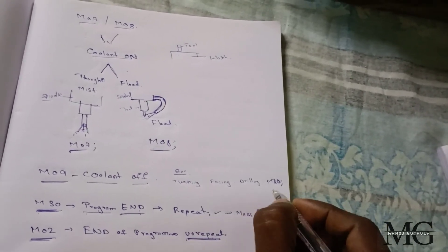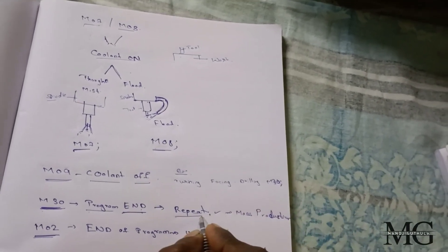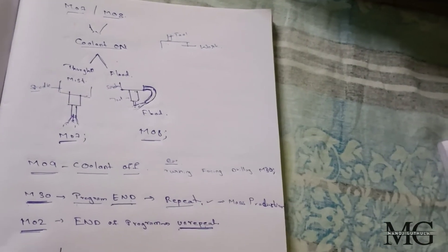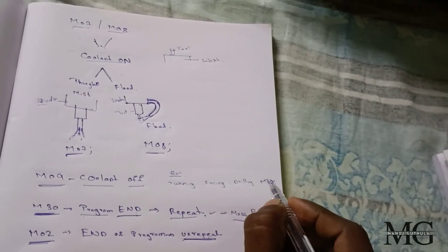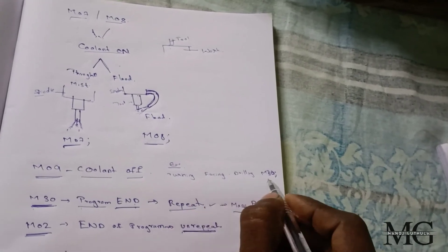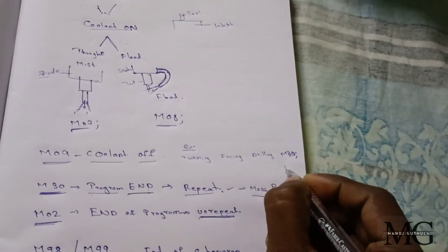The difference is, when we use M30, the program can be reusable and it is repeatable. Because when there is mass production, we use M30 at the end of the program. And when we need just one for manufacturing single part, we use M02.